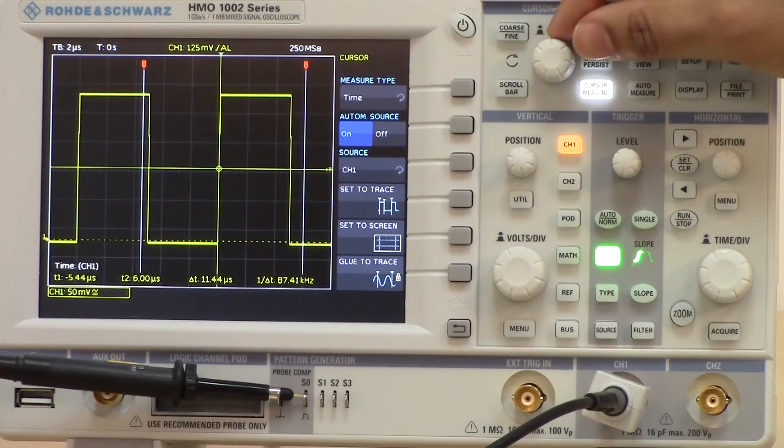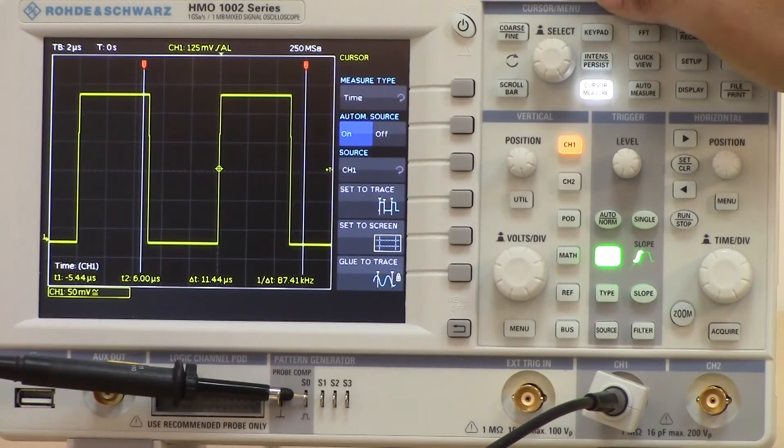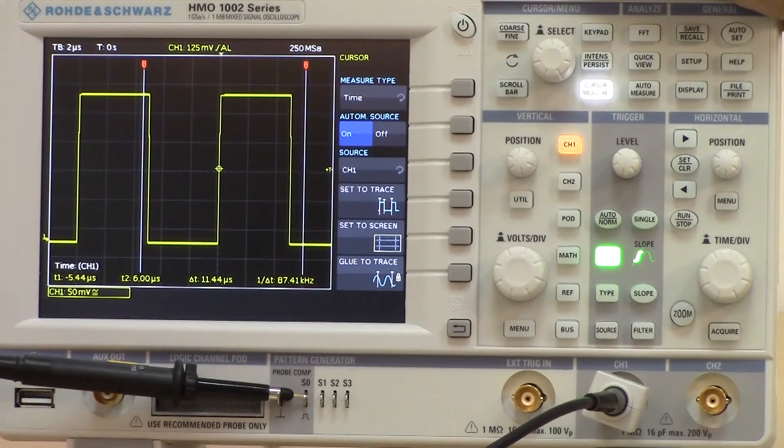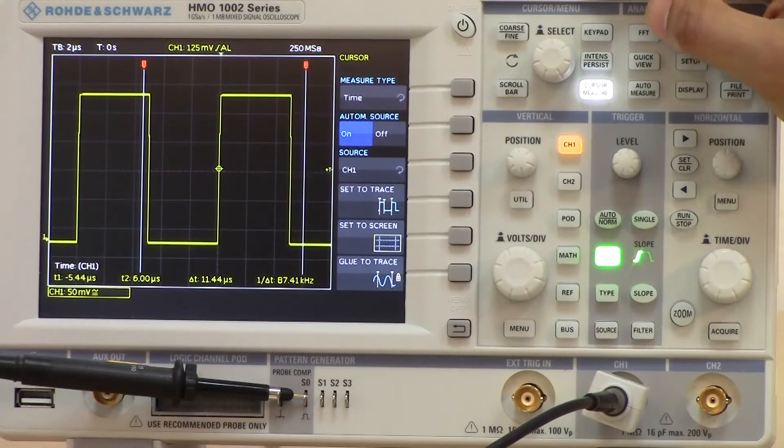Now there are a few functions on the cursor menu which make life a bit simpler. There is a function called set to trace. For example, in this mode we haven't had the cursors right on the pulse for looking at a period of that pulse.